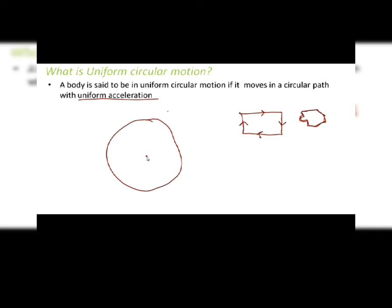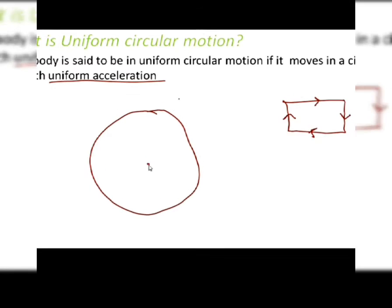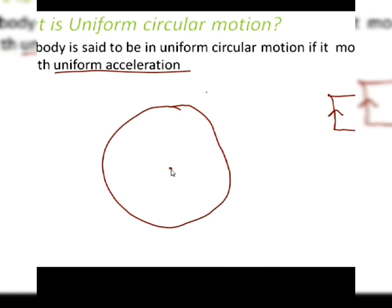Now what is this uniform acceleration? It's moving with a velocity which is constantly changing with time, but uniformly. Let's suppose a person moves along this direction with a constant speed along the same direction - in that case, your velocity is not changing with time.